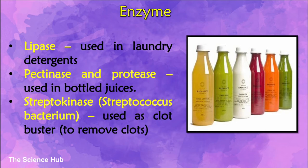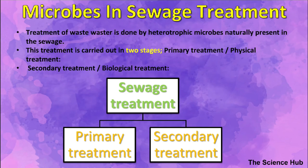Microbes in sewage treatment — municipal wastewater, that is sewage, contains large amounts of organic matter and pathogenic microbes and cannot be discharged into major water bodies like rivers and streams. Sewage is treated in sewage treatment plants to make it less polluting by using heterotrophic microbes naturally present in the sewage.